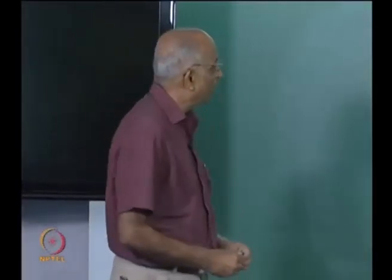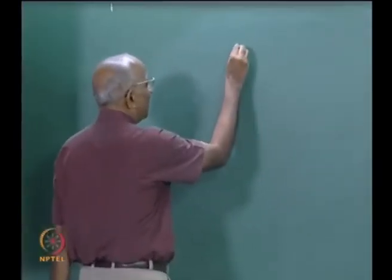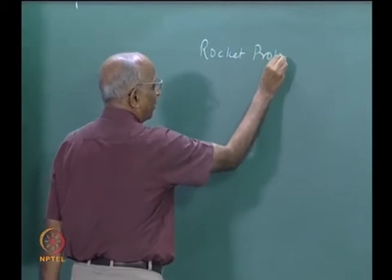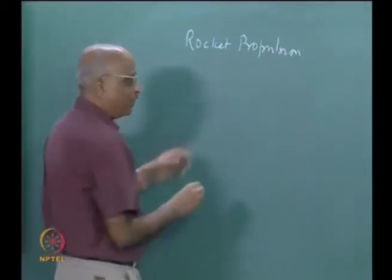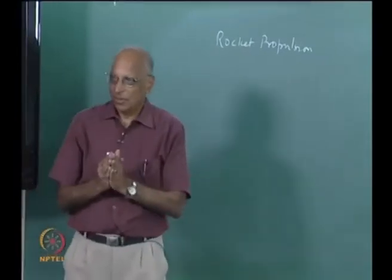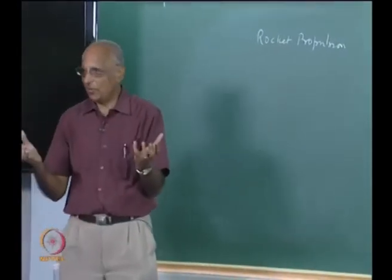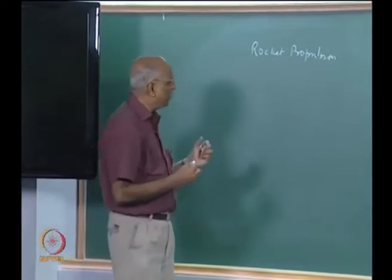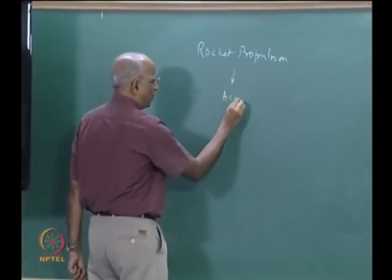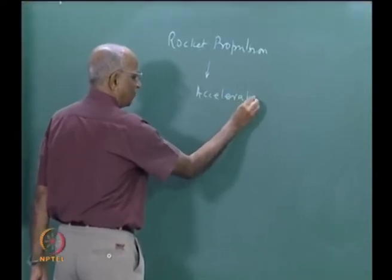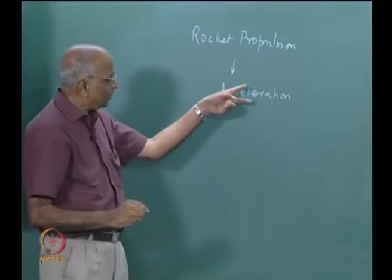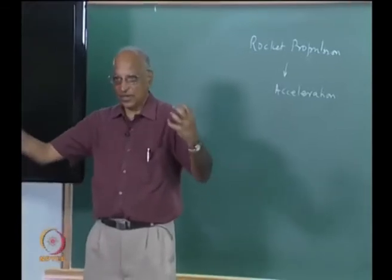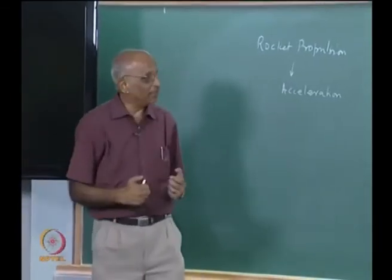Good morning. In today's class, we will look at the theory of rocket propulsion again. We derived the rocket equation in the last class. We also looked at staging, clustering of rockets, and strap-on rockets and what function they do. But we did not really calculate what is the type of acceleration we can get from a rocket at takeoff. This will illustrate why we need additional straps or clustering when a rocket is going to take off.